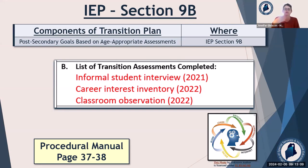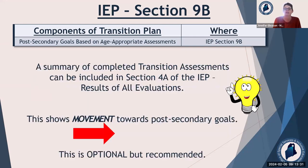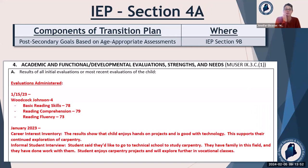There are some times where the student is going to work at their parents' business and they know that — and you don't really have to do a lot of assessments. But most of the time you want to make sure you have assessments in there every year. The NWEAs and eligibility evaluations are not considered transition assessments, so please don't put them in there. You can put SATs, PSATs, Accuplacer, that kind of thing if they're going to college. You can put results of transition assessments in section 4A of the IEP — it really shows that the IEP is geared toward the transition plan.